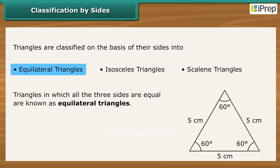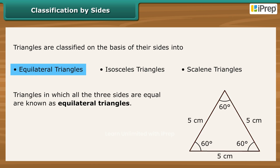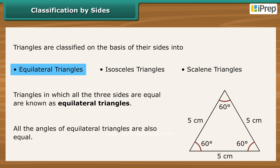Triangles in which all three sides are equal are known as Equilateral Triangles. All the angles of Equilateral Triangles are also equal.